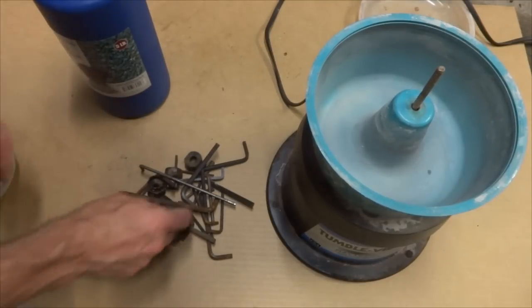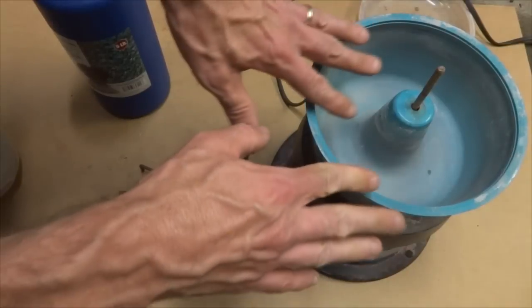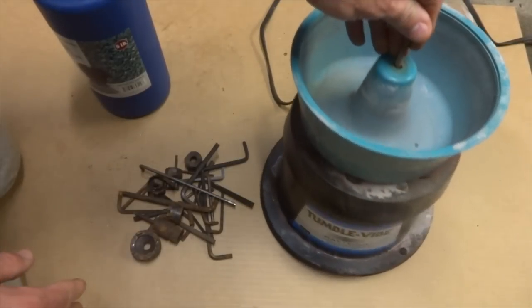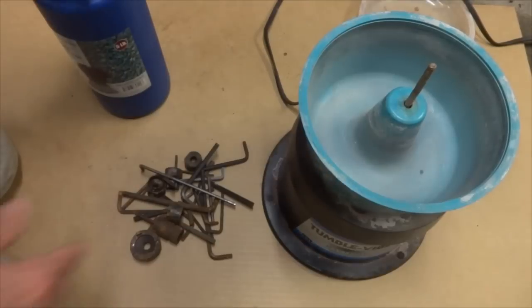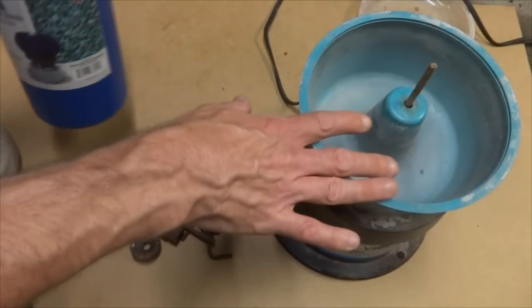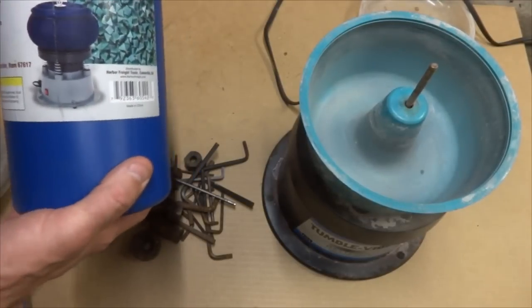I want to get these cleaned up, so I'm going to use a vibratory tumbler. This is a Raytech Tumble Vibe here, but there's a lot of different brands of vibratory tumblers out there. I use this mostly for polishing rocks and stuff, but this should work for this.